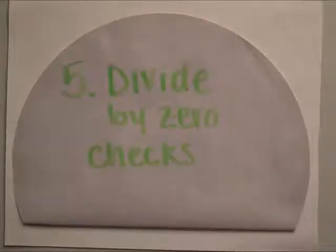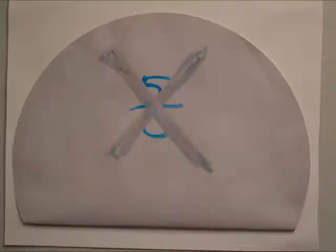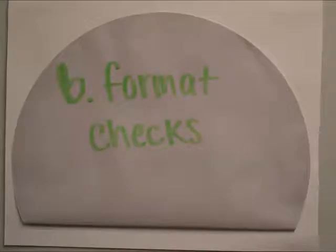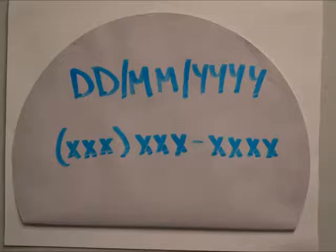Divide by zero checks ensure that the program never divides a value by zero. Format checks confirm the data fits into the specified format or template. A date should input a specific day, month, year format instead of one long line of values. And telephone numbers should input as three separate sets of numbers instead of just one long number.